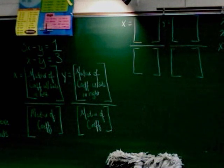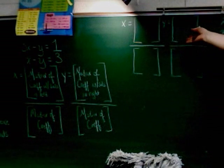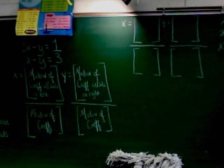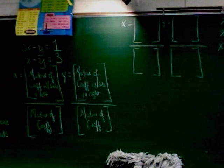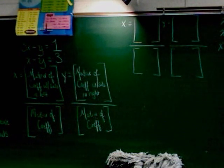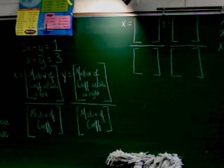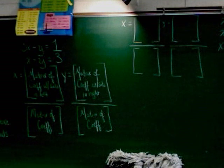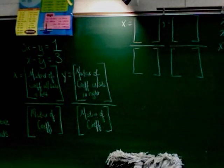Step two: set up two fractions, one for x and one for y, and put two-by-two matrices there. Step three is where we actually have to start working — put the matrix of coefficients in both denominators in the order they appear in the problem with their signs. The best first thing we can do is write out the coefficients. Remember, coefficients are just the numbers in front of variables.